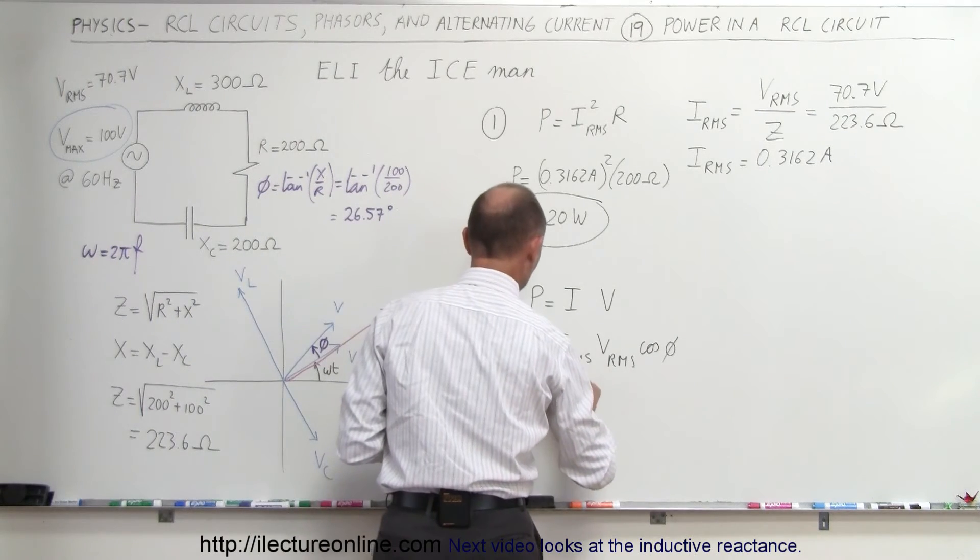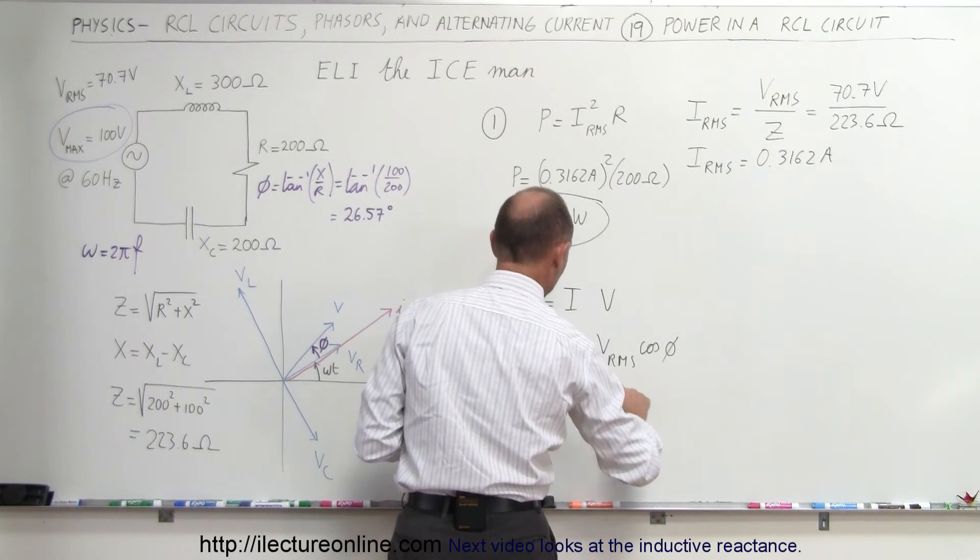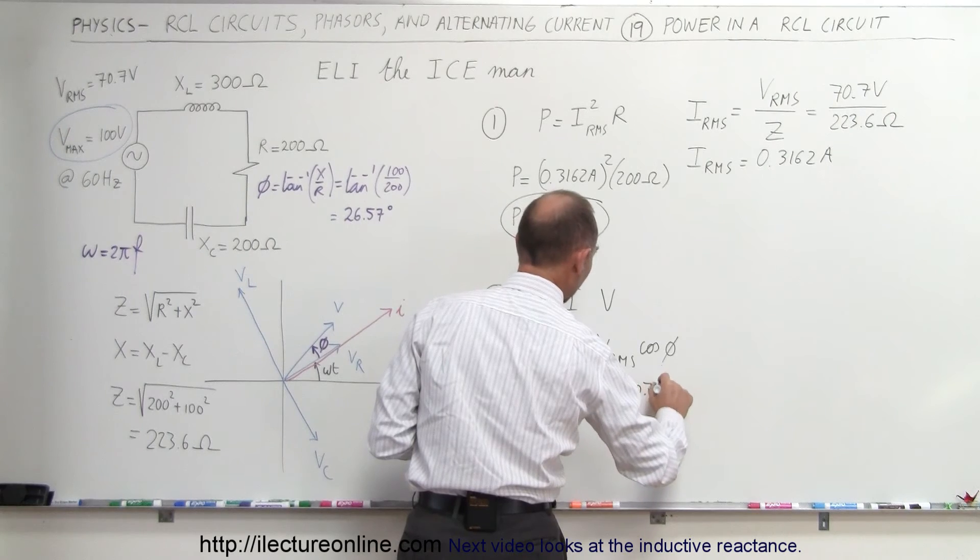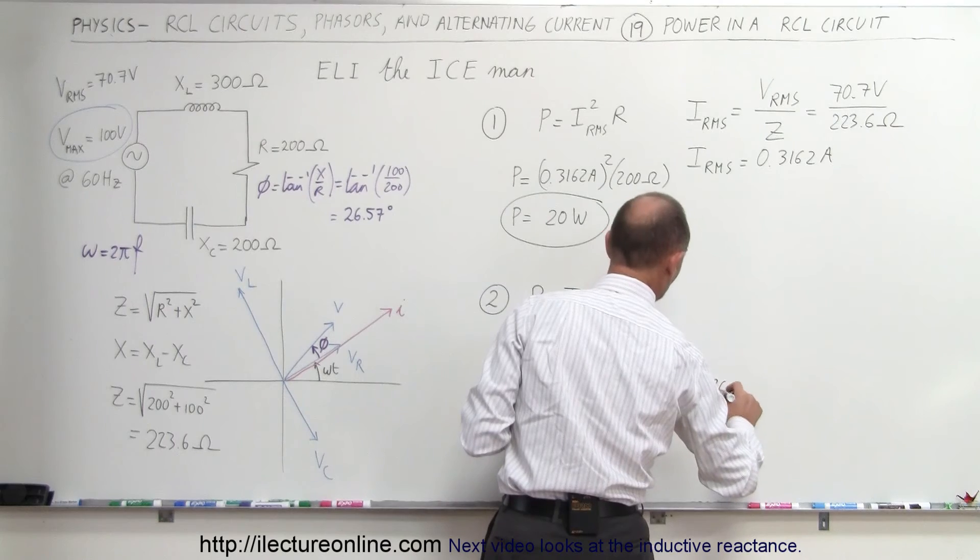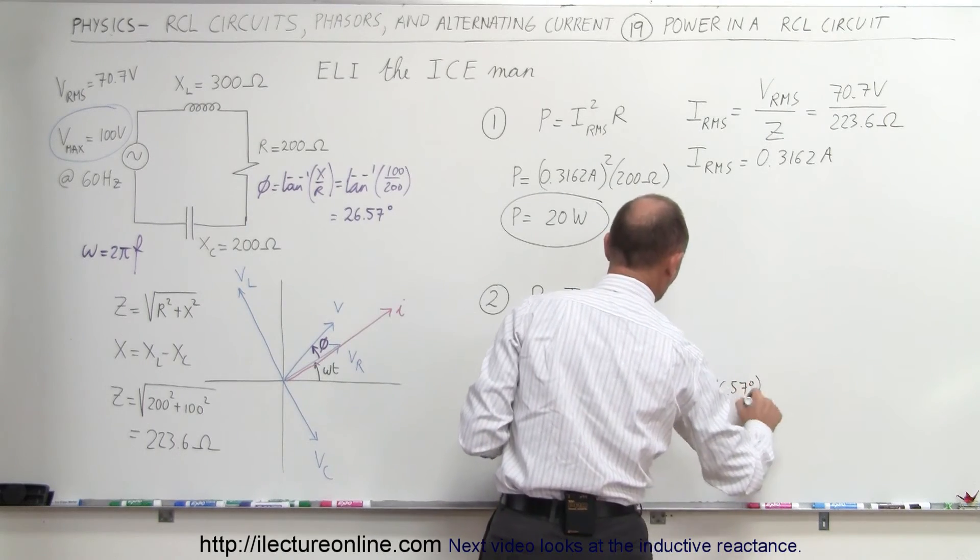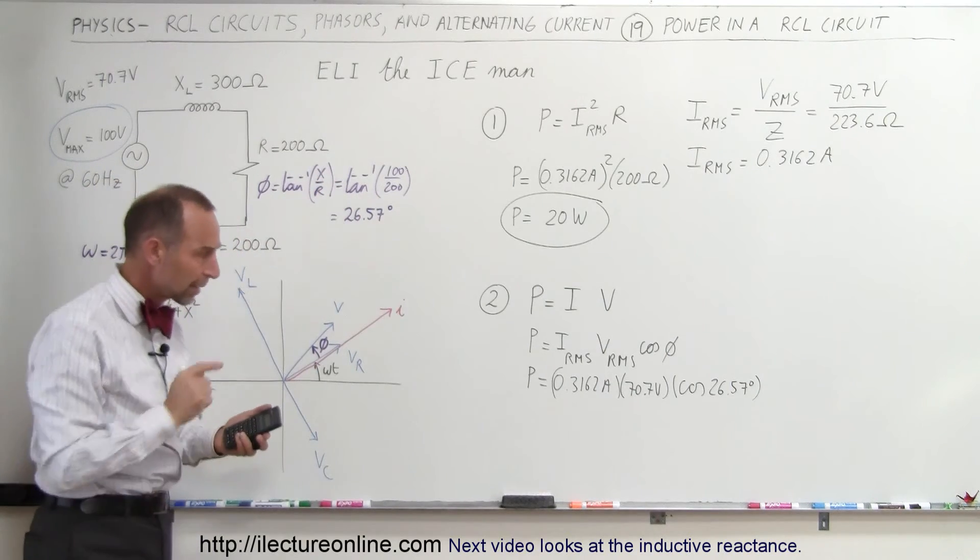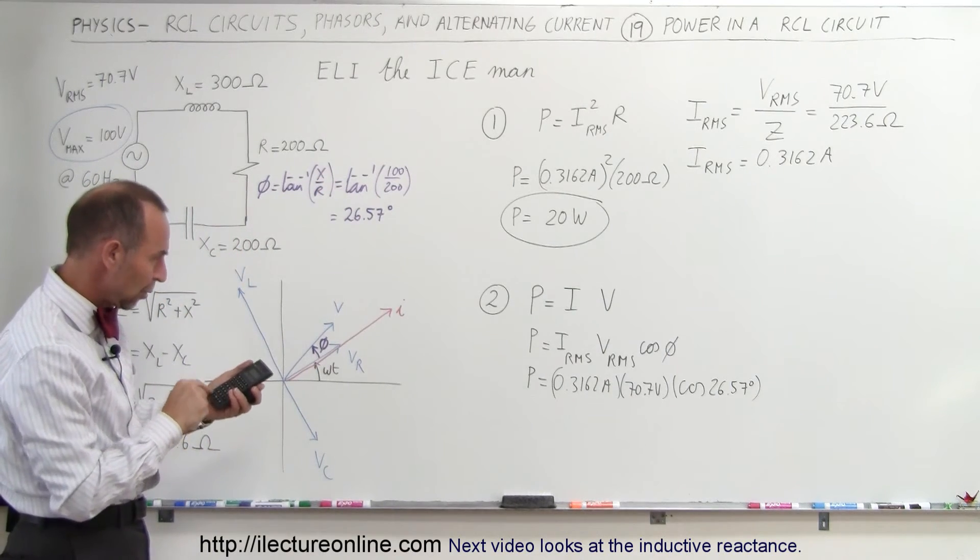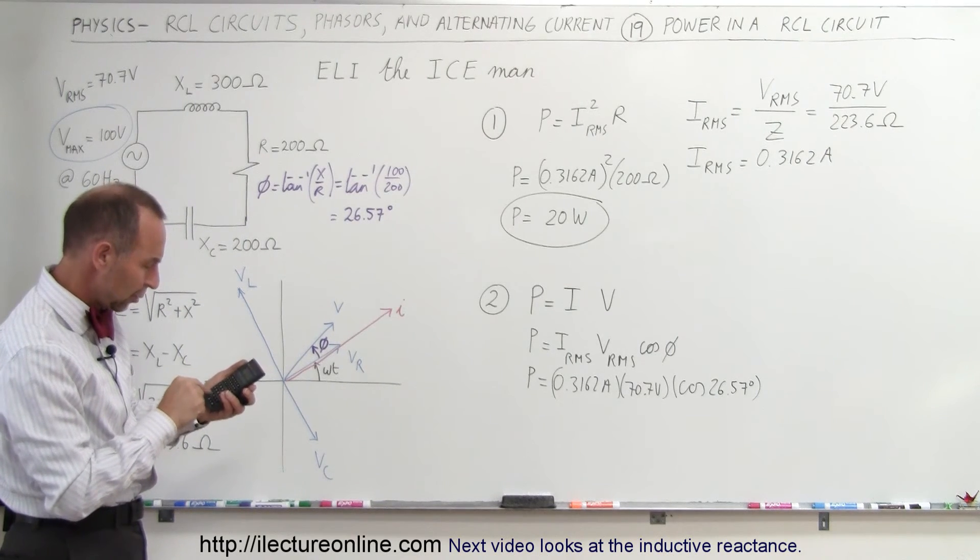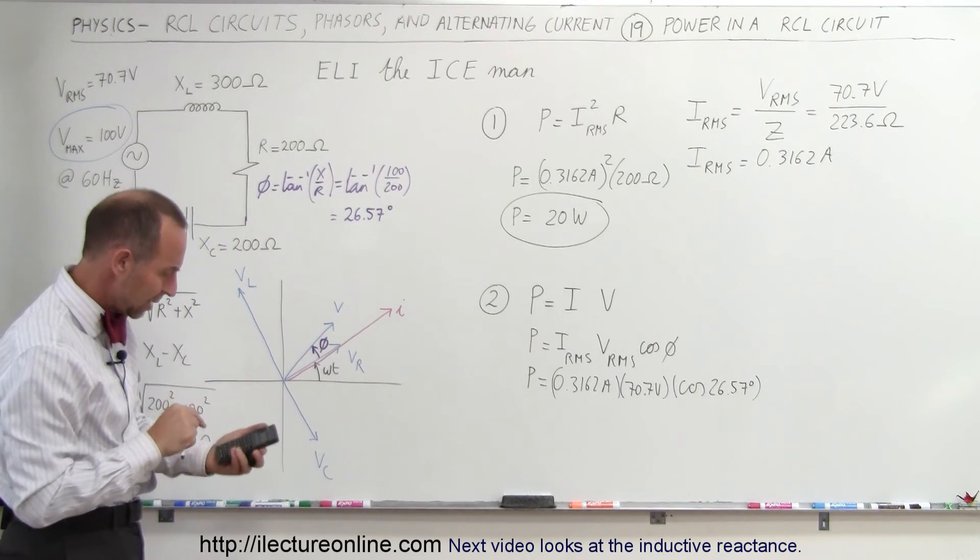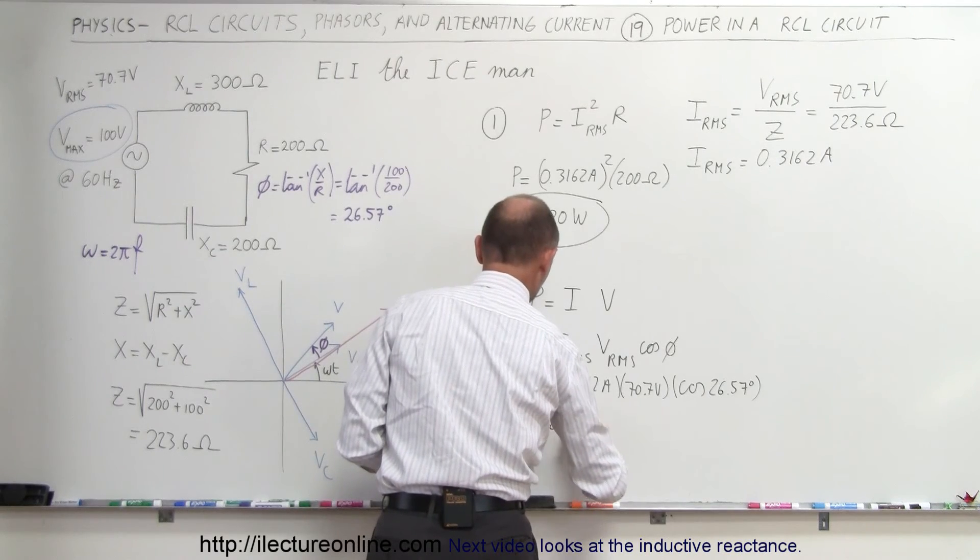So in this case, we could say that the power is equal to IRMS, which is 0.3162 amps, times the voltage RMS, which is 70.7 volts, times the cosine of the phase angle, which we have over here, of 26.57 degrees. Remember that the phase angle of circuit is equal to the arctangent of the reactants divided by the resistance. So we have 0.3162 times 70.7 times the cosine of 26.57, and sure enough, we get the power equals to 20 watts.